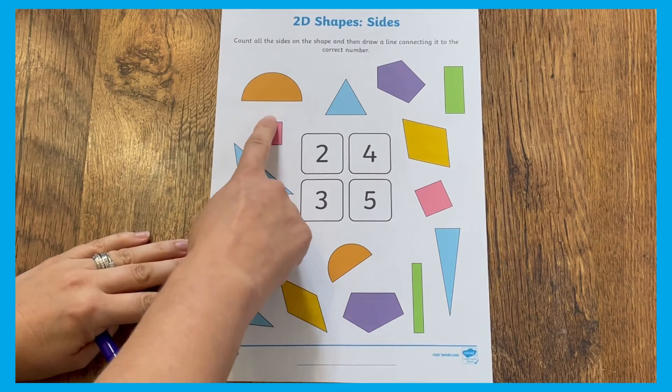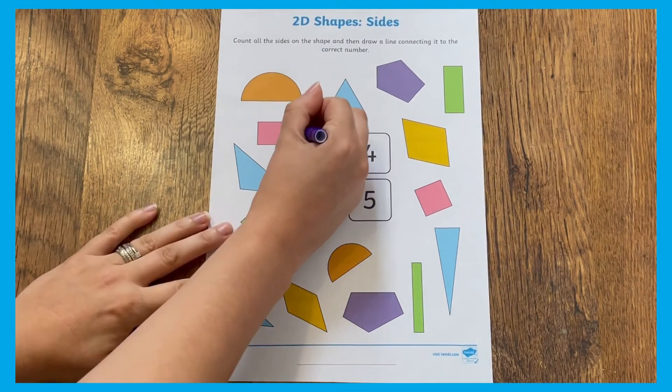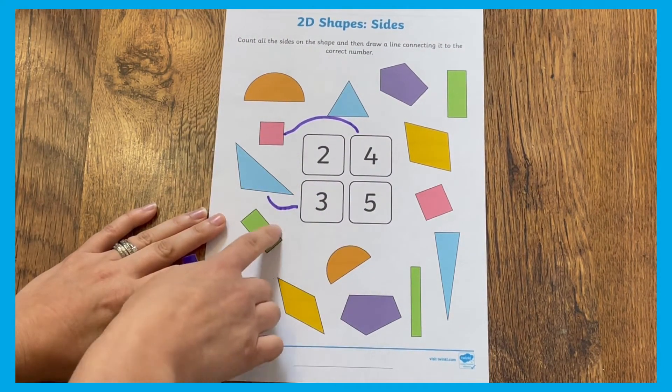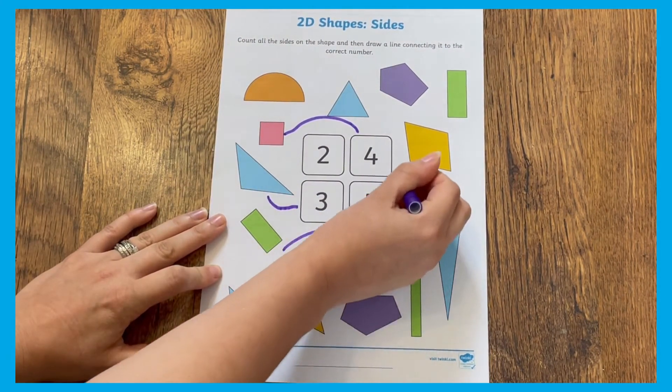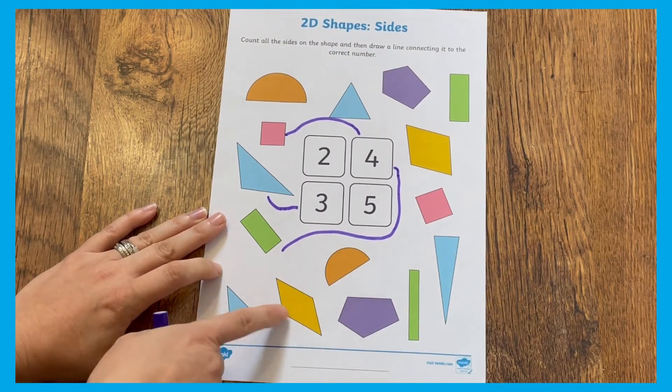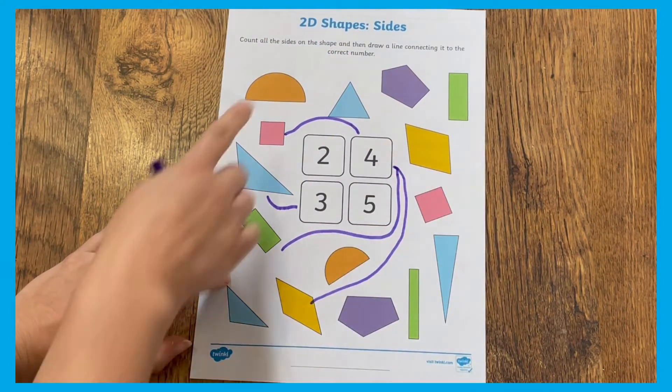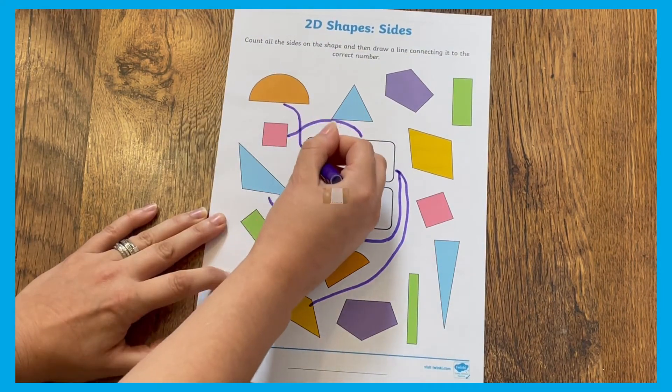This next worksheet asks the children to count all the sides of the shapes, then draw a line connecting it to the correct number.